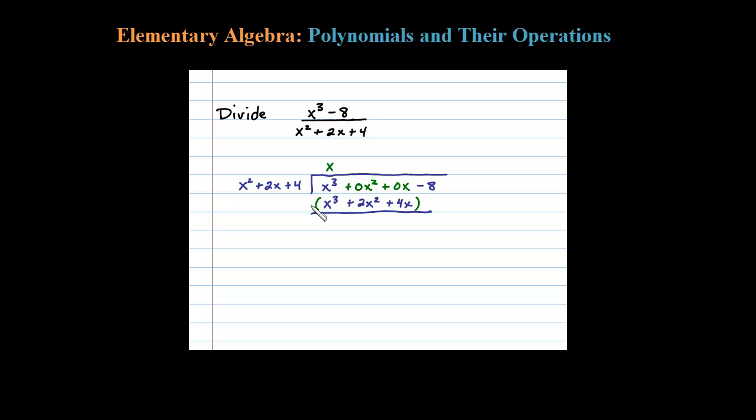Using the division algorithm, we have to subtract. When we subtract, we have to distribute the negative. x cubed minus x cubed is 0, 0x squared minus 2x squared is minus 2x squared, 0 minus 4x is minus 4x.